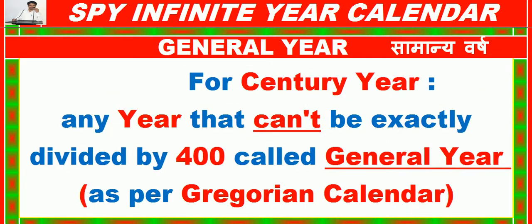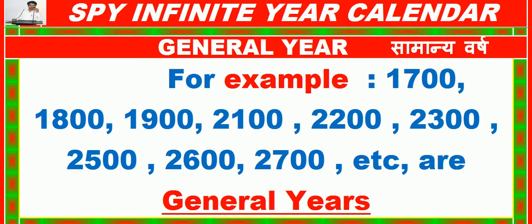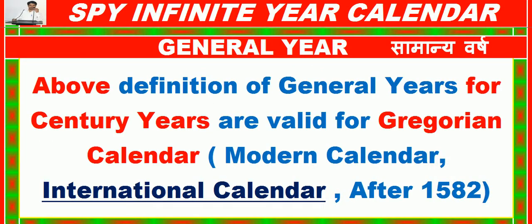For century years, as per the Gregorian Calendar, any year that cannot be exactly divided by 400 is called a General Year. For example: 1700, 1800, 1900, 2100, 2200, 2300, 2500, 2600, 2700, etc. are General Years. This definition is valid for the Gregorian Calendar (Modern / International Calendar) after 1582.